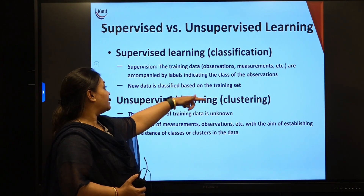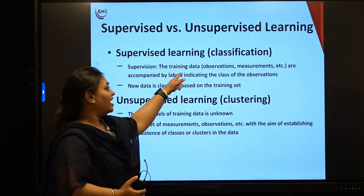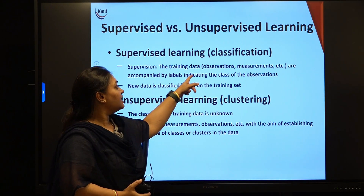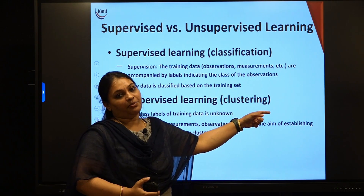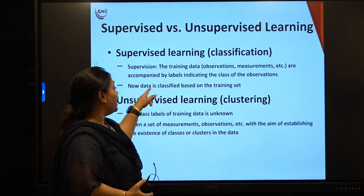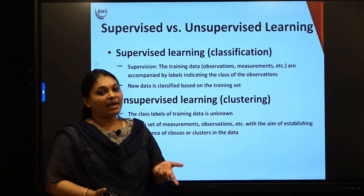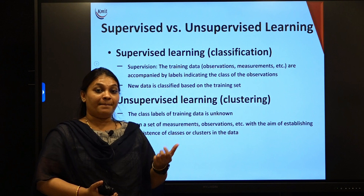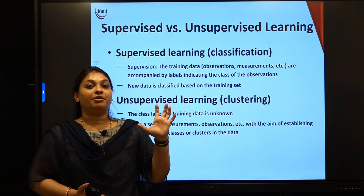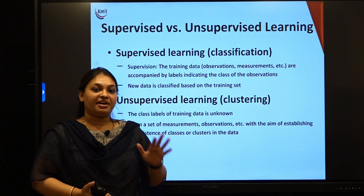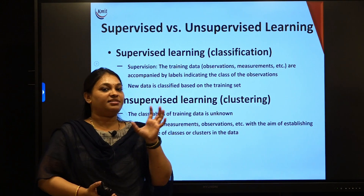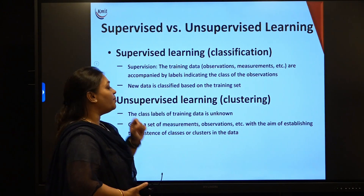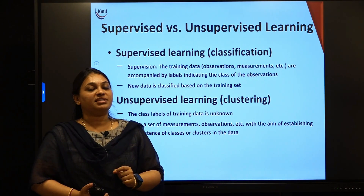In supervised learning, the training data — that is, your observations or measurements — are accompanied by labels indicating the class of the observations. New data is then classified based on the training set. For example, if I have a bunch of vegetables and fruits, I classify vegetables into one group and fruits into another — that is classification.